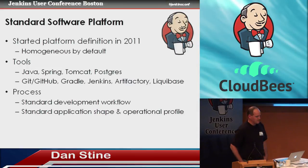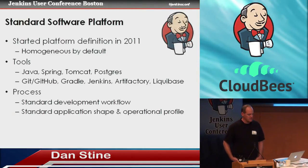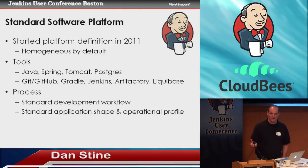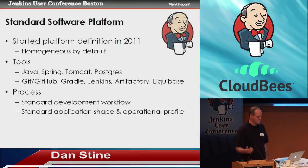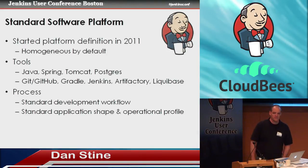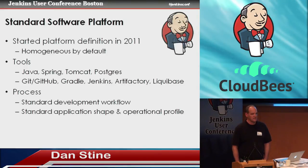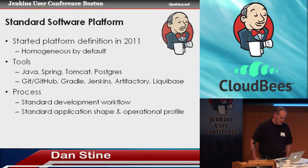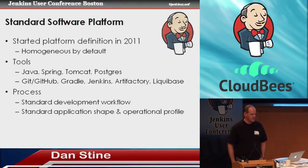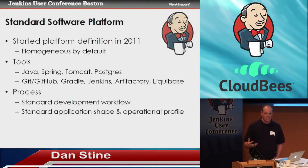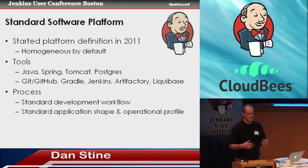Some context: three years ago we started this platform effort and one of our highest guiding principles was to be homogeneous by default — pick a standard set of technologies, tools, and processes and use them. That doesn't mean we can't have variations, but there should be a particular reason. These are some of the tools we picked: Java, Tomcat, Postgres, and on the SCM side most of these should be familiar. Liquibase may be a bit less common — that's a database schema migration framework. We picked common tools and then instituted common process around them. Developers on their machines should have a common experience no matter which project they work on.